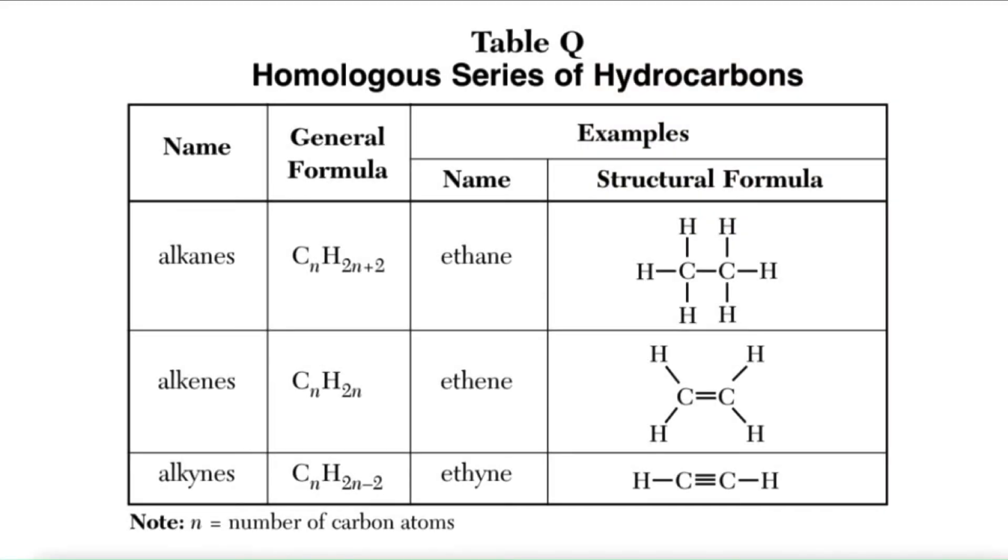Table Q actually pretty much tells you everything you really need to know about the difference between alkanes, alkenes, and alkynes. An alkane is a hydrocarbon containing just carbon and hydrogen that contains no double or triple bonds. So an alkane only contains single bonds. An alkene contains at least one double bond and an alkyne, you guessed it, contains at least one triple bond.